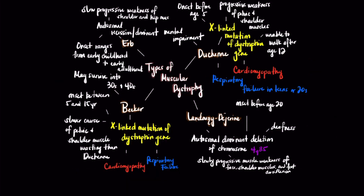Muscular dystrophy is a genetic disease that is related to gradual symmetric muscle wasting of the skeletal muscles without neurologic involvement, with the most common type being Duchenne's muscular dystrophy.